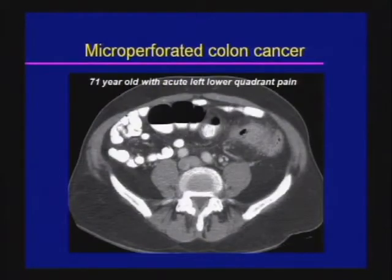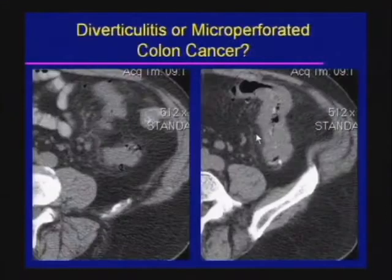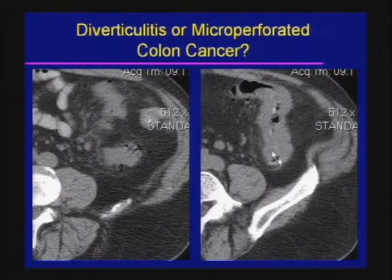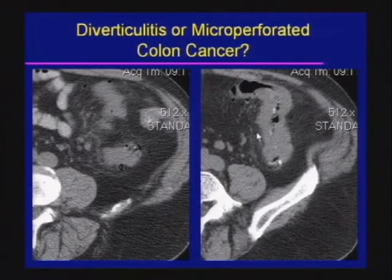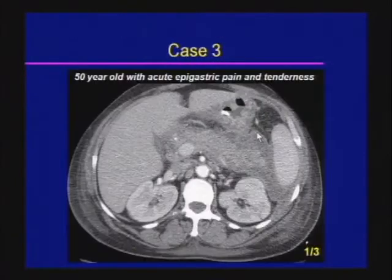Here is a case of microperforated colon cancer. Note how similar it looks to diverticulitis — thickened wall, pericolonic stranding. One of two presented cases is diverticulitis and the other is microperforation, and honestly you can't tell the difference. You really can't exclude a microperforated underlying colon cancer. It's rare, but it does occur.